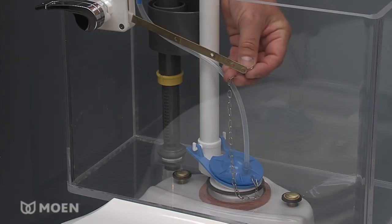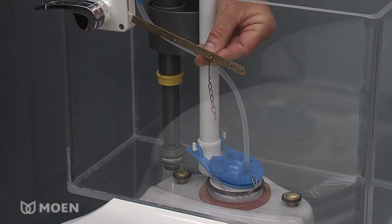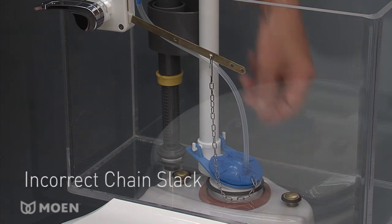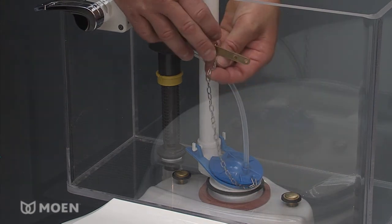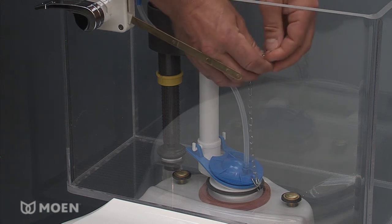When attaching the flapper chain to the brass arm of the tank lever, choose the hole that will allow the chain to have just a small amount of slack. If necessary, remove the hook from the flapper chain and move a few links down to achieve the optimal chain slack.